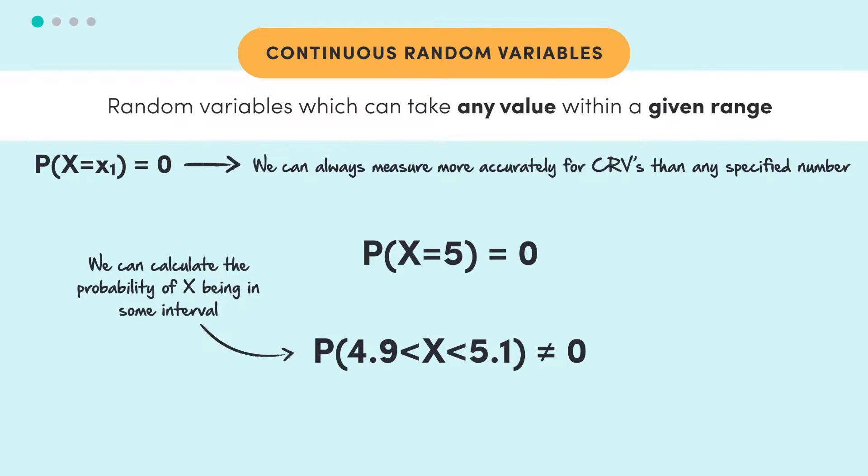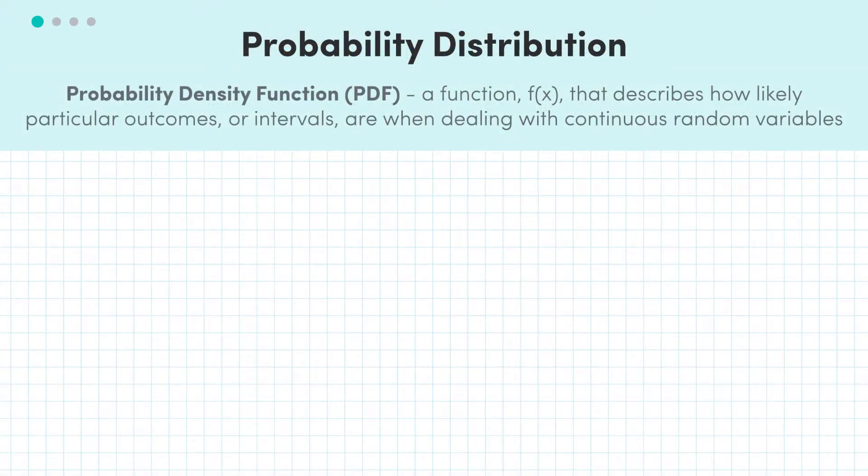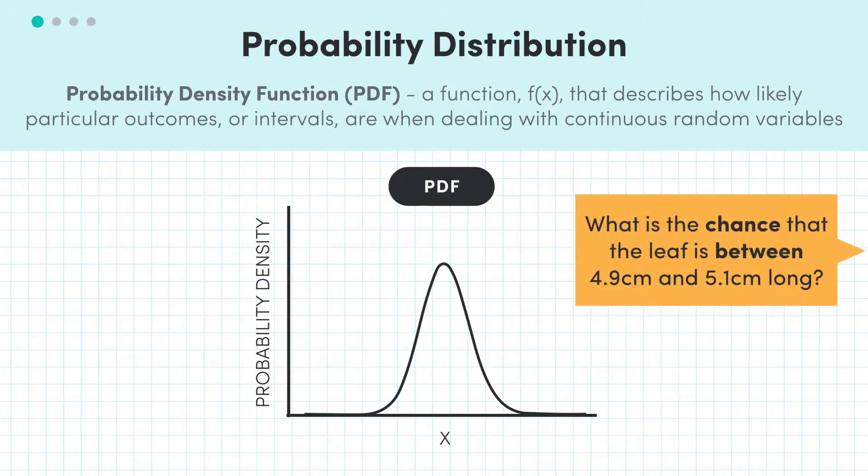To do this formally, we need to introduce what's known as a probability density function. Instead of using a probability mass function, like for discrete random variables, a probability density function, or PDF, tells us the probability distribution of a continuous random variable. It tells us how likely particular outcomes or intervals are. And it also helps us answer questions like, what's the chance that our leaf is between 4.9 centimeters and 5.1 centimeters long?